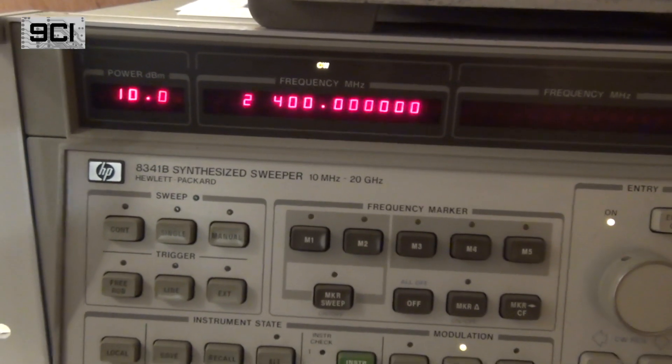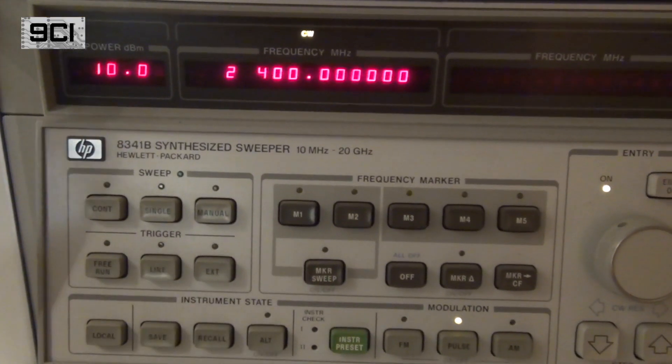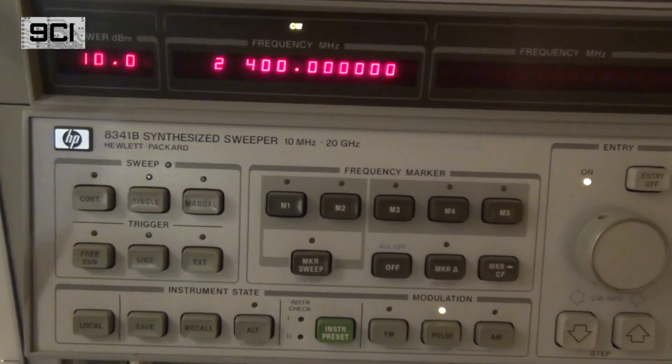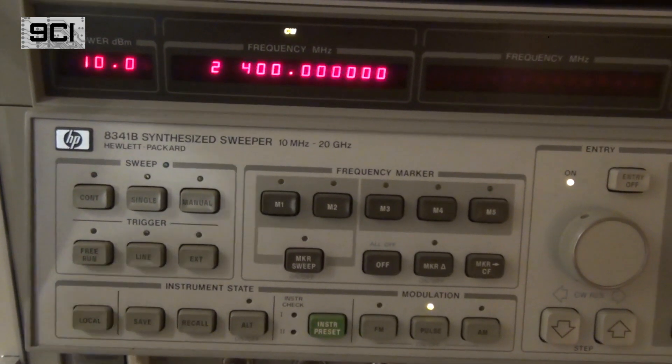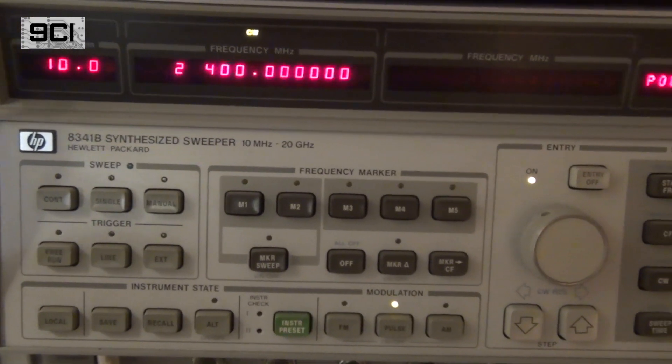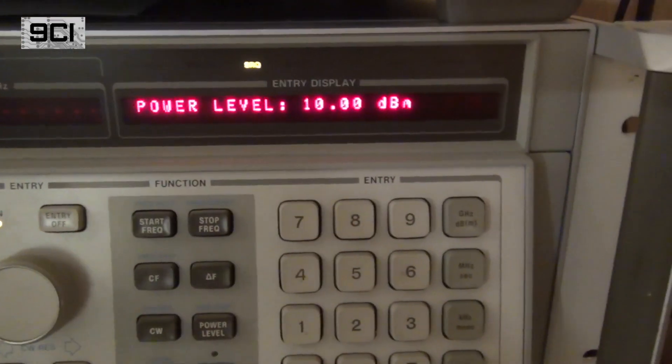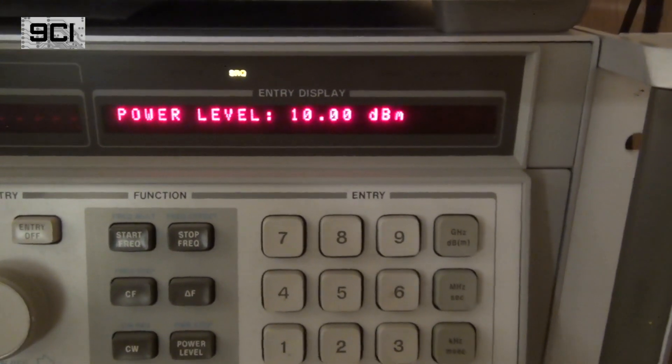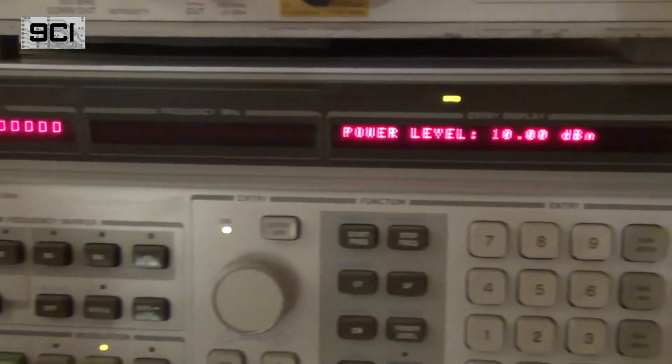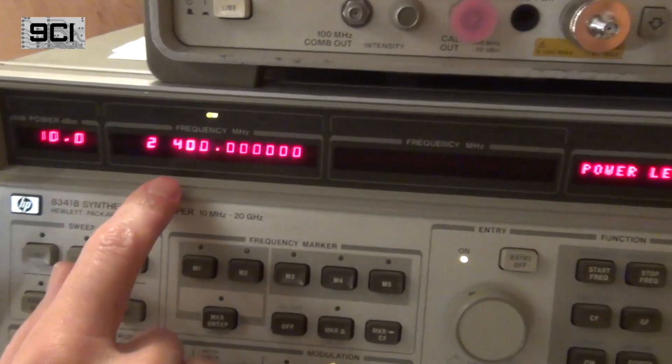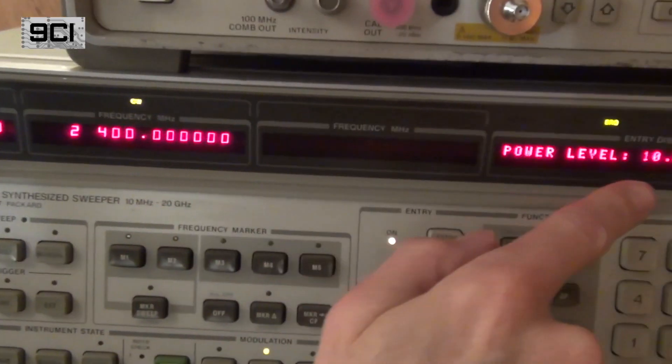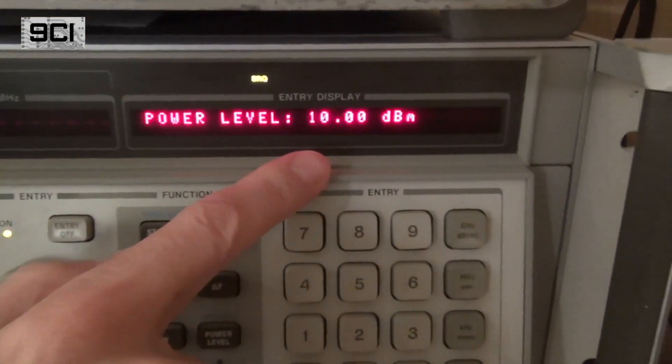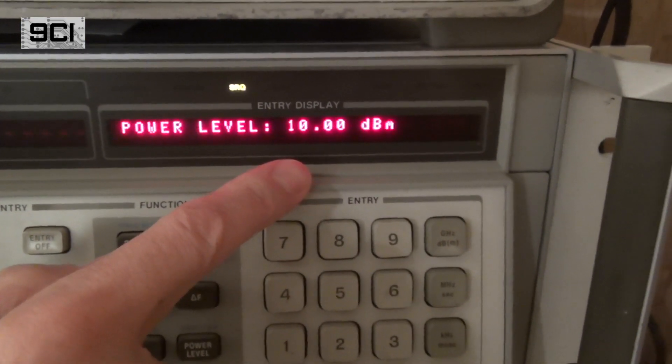For this test, we'll be using the HP8341 RF signal generator that can cover from 10 megahertz to 20 gigahertz. Since we're not comparing these meters for power measurement accuracy on this video, we'll keep the test frequency of 2.4 gigahertz and the power level of plus 10 dBm. We'll keep that the same for all these tests.